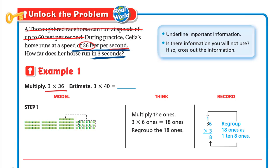Let's first estimate 3 × 36. We round 36 to the nearest ten: to the right of the 3 we have 6, which is a strong digit, so 36 rounds up to 40. So we estimate 3 × 40. We multiply 3 × 4 = 12 and write a zero, giving us an estimate of 120. Now let's see how to multiply 3 × 36 using regrouping.